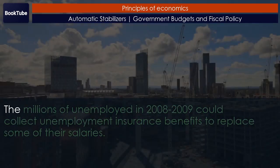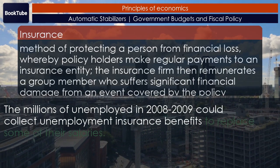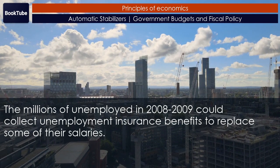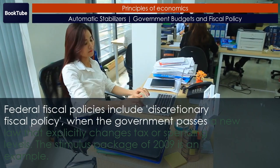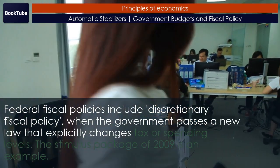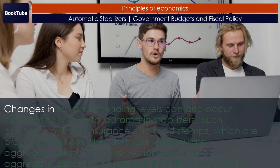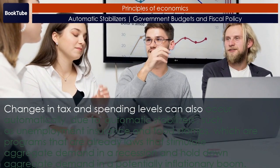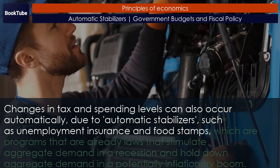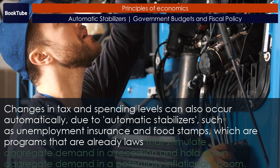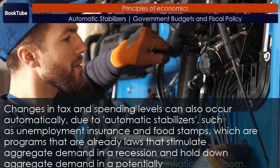Automatic stabilizers are a key part of federal fiscal policy. The millions of unemployed in 2008-2009 could collect unemployment insurance benefits to replace some of their salaries. Federal fiscal policies include discretionary fiscal policy, which occurs when the government passes a new law that explicitly changes tax or spending levels — the stimulus package of 2009 is an example. Changes in tax and spending levels can also occur automatically due to automatic stabilizers such as unemployment insurance and food stamps, which are programs that stimulate aggregate demand in a recession and hold down aggregate demand in a potentially inflationary boom.